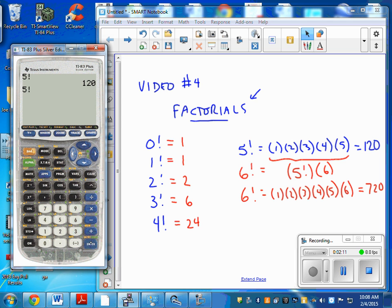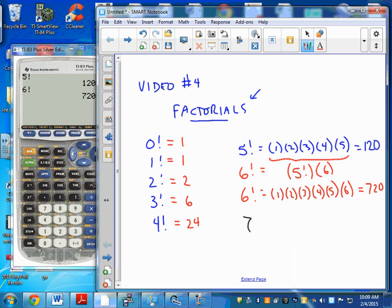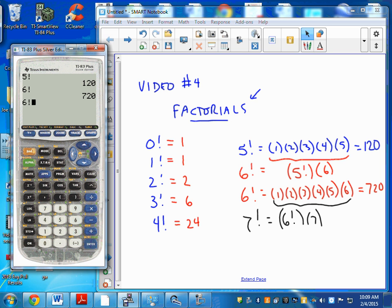We go to our calculator, that's 720. If you already have this brought up, you can just do second enter and edit that to 6, and sure enough, 720. Okay, back over here. 7! is going to be 6!, which is all of this, times 7. So you can do that here. We have 6! and let me just multiply that times 7, so that's 5040.